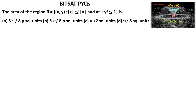We need to find the area of the region R = {(X, Y) : |X| ≤ |Y| and X² + Y² ≤ 1}.